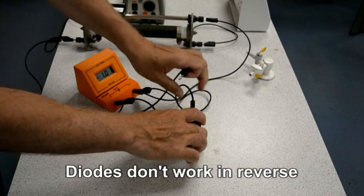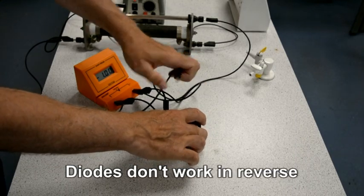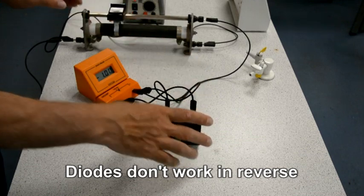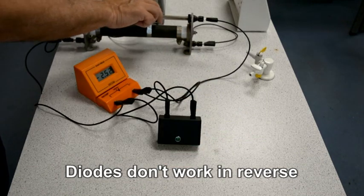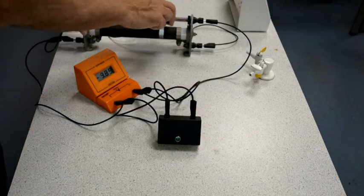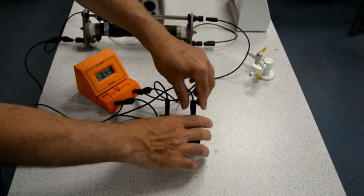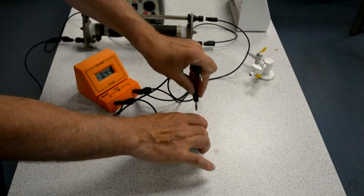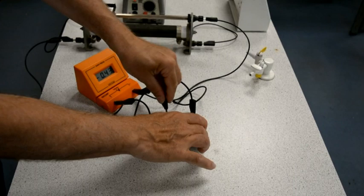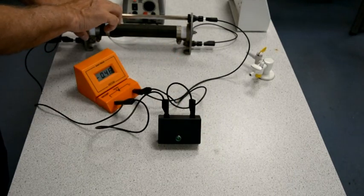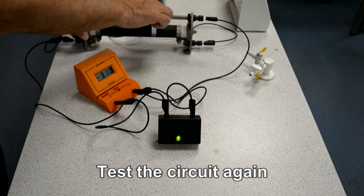If the diode doesn't work, there's a very good chance that it's connected back to front. Diodes only work in one direction. As you can see, there's no light. Again, just make sure the circuit's working properly.